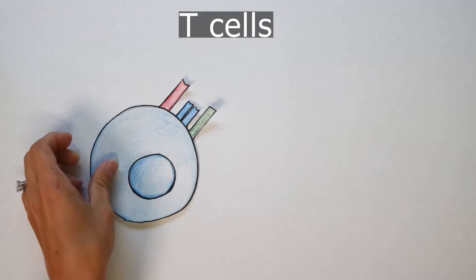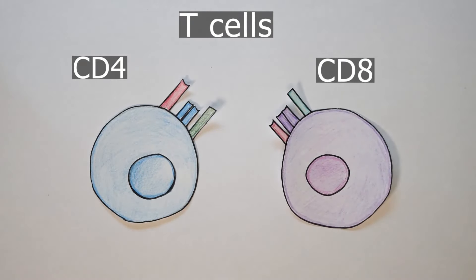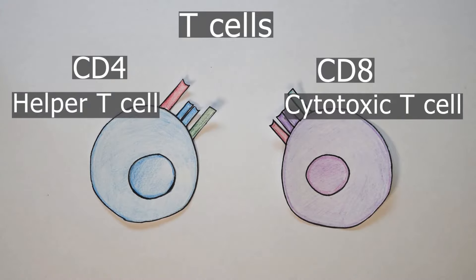T cells belong to the category of the immune system called adaptive immune cells. That means that they can potentially remember something pathogenic for your entire lifetime. There's two different types: CD4 T cells and CD8 T cells. CD4 T cells are often called helper T cells, whereas CD8 T cells are often called cytotoxic, meaning directly cell killing.